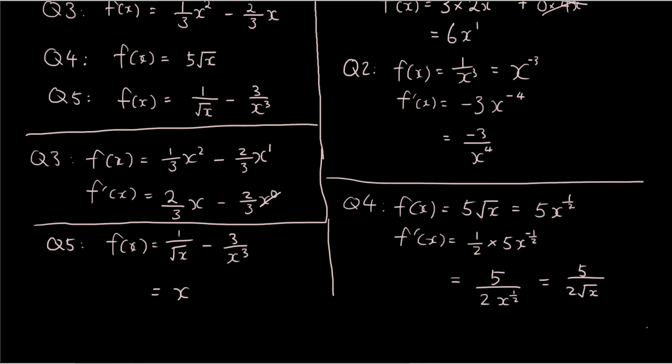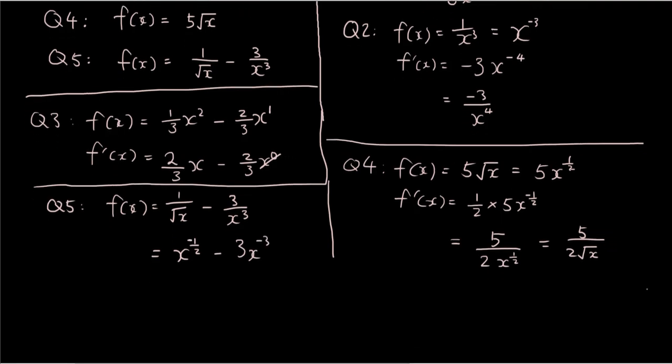So we have square root of x is the same as x to the power of a half. But because we are moving it to the top, we need to change the sign. Minus 3x to the power of negative 3. Now notice how it's still f(x), we haven't differentiated yet.